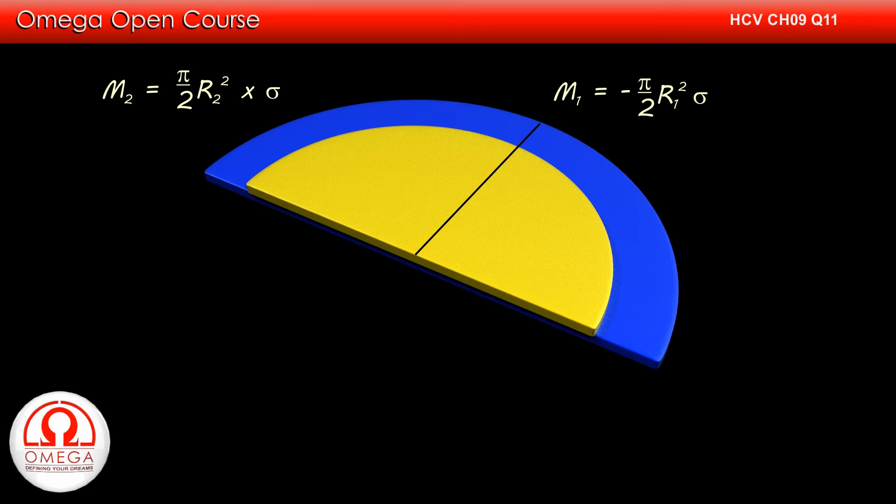The center of mass is given by sum of mass times distance divided by total mass. In this case, since our masses are semicircular disks, we need to take the distance of center of mass of semicircular disk.